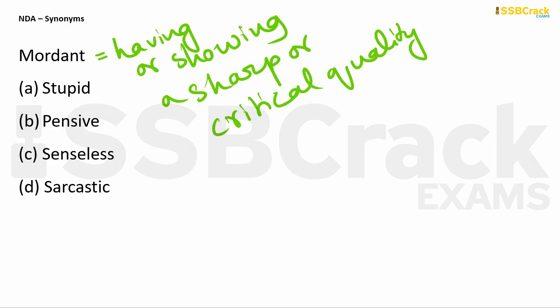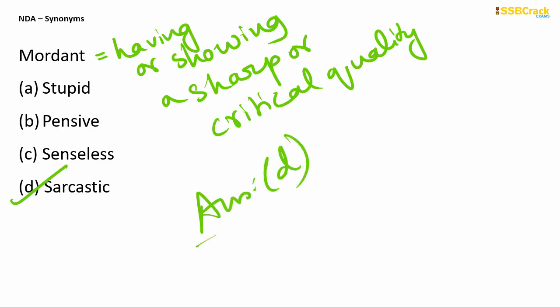The next word is mordant. Mordant means having or showing a sharp or critical quality. A word synonymous with mordant is 'sarcastic' — sarcastic also means having a critical, ironic way of mocking something or someone. So 'sarcastic' is synonymous with mordant, and your answer is option D.